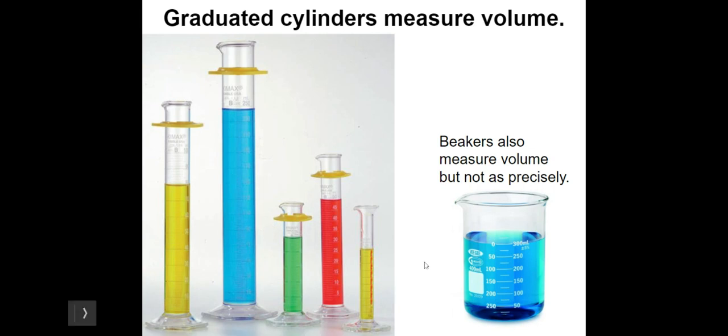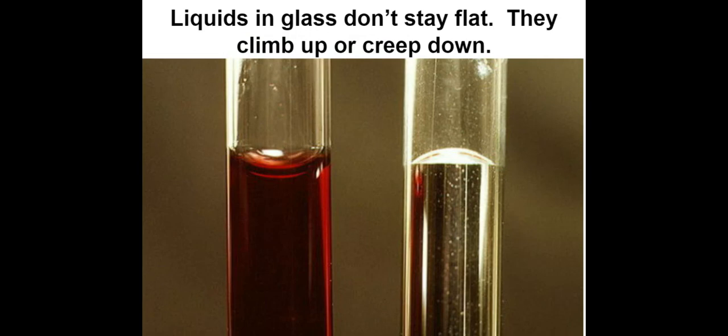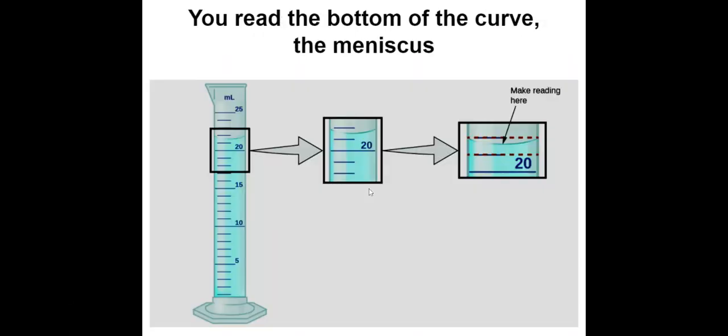So graduated cylinders, we're going to go in depth on that a little bit more, because they're a little bit tricky. Here's some reasons why. Liquids in glass don't stay flat. They tend to climb up the sides or kind of creep down the sides. So you get this bowl shape, or you get sort of a dome shape. And mostly what we're going to see is a bowl shape, because that's what water-based things do. You read the bottom of the curve, and that's called the meniscus. So the bottom of that little bowl shape, that's where we're saying where to read that, right at the bottom of the curve.